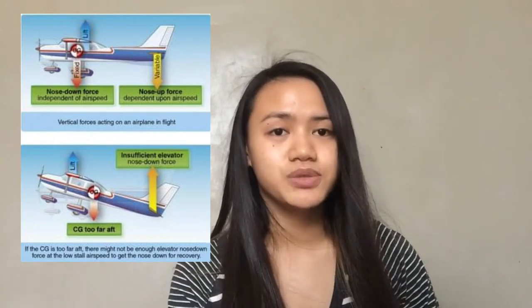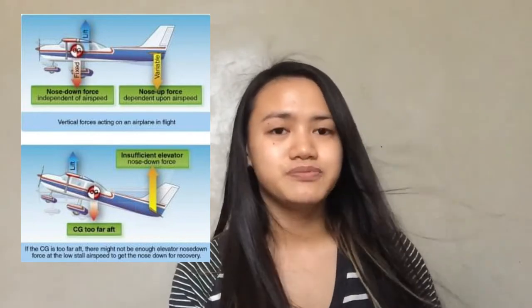The CG, or center of gravity, is the theoretical point at which the entire weight of that body is assumed to be concentrated — the point at which the aircraft will balance and around which it moves. The position of the CG determines the stability of the aircraft in flight. As the CG moves rearward or towards the tail, the aircraft becomes more and more dynamically unstable.